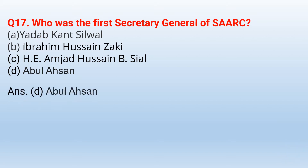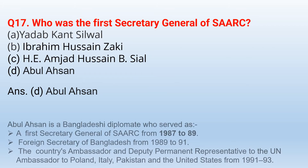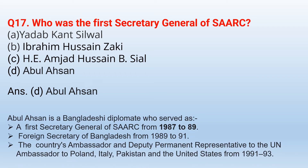The correct option is option D — Abul Ahsan. Abul Ahsan is a Bangladeshi diplomat who served as the 1st Secretary General of SAARC from 1987 to 1989, Foreign Secretary of Bangladesh from 1989 to 1991, and the country's Ambassador and Deputy Permanent Representative to the UN, Ambassador to Poland, Italy, Pakistan and the United States from 1991 to 1993.